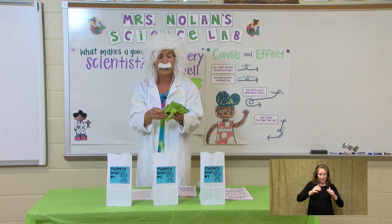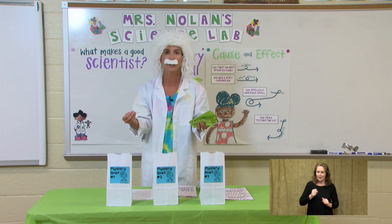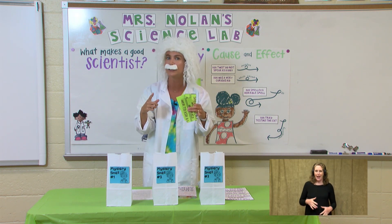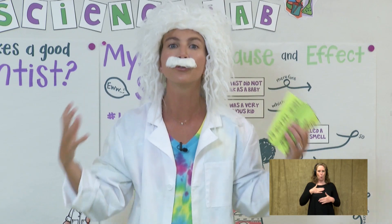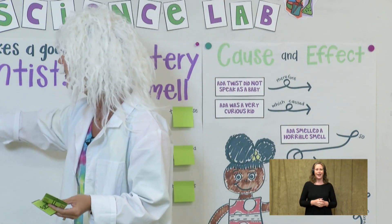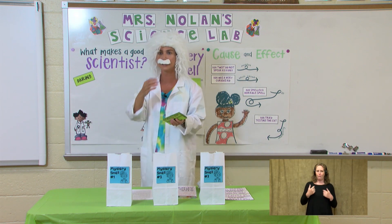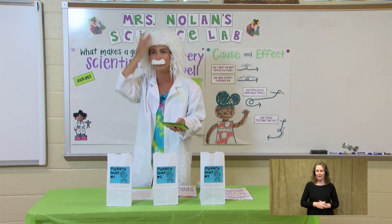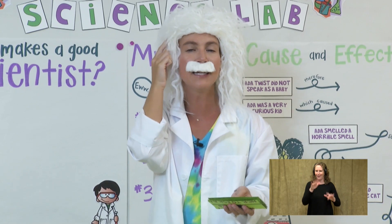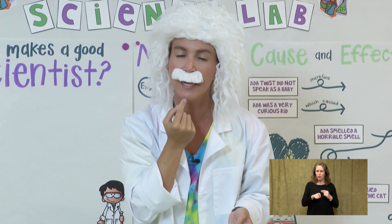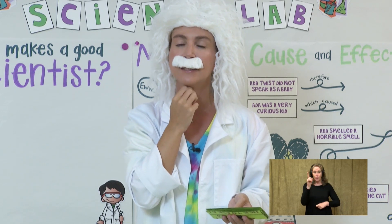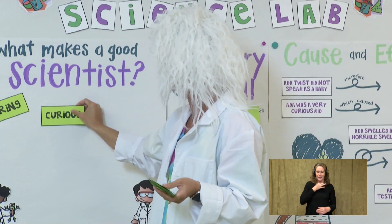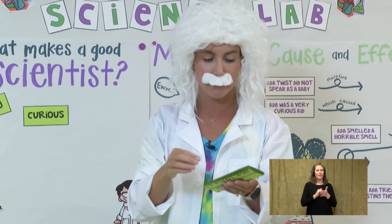Before we get started, I want you to think about what makes a good scientist. What are some words we could use to describe a scientist? Do scientists have to try new things? They have to be very bold and very daring. If you're very daring, you're willing to try new things. Scientists are very daring, and they're not afraid to try new things. Scientists also ask a lot of questions, and if you ask a lot of questions, that means you're very curious.